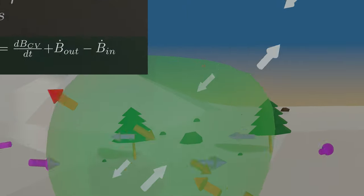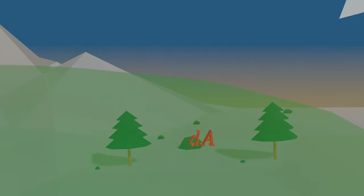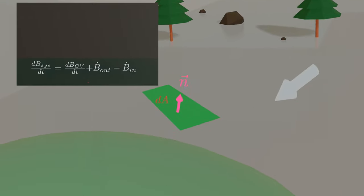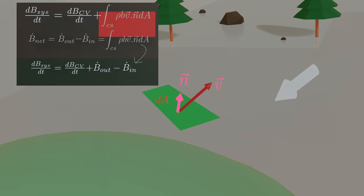To generalize this process, we consider a differential surface area on the control surface, and denote its unit outer normal by n vector. The flow rate of property B through dA is. Now, if we integrate over entire area. An important aspect of this relation is that it automatically subtracts the inflow from the outflow.